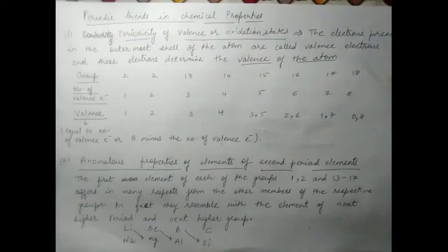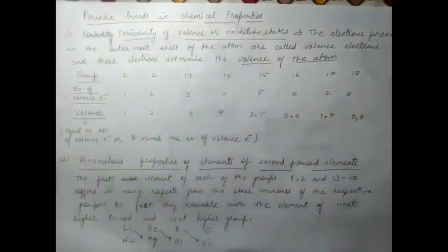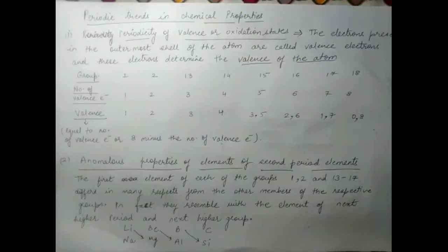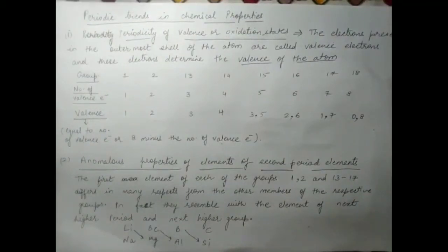Now moving on to the last topic of this chapter: periodic trends in chemical properties. We have already learned the variation of periodic properties in periods and groups. The first topic here is periodicity of valence or oxidation state. The electrons present in the outermost shell are called valence electrons, and they determine the valence — that is, the combining capacity — or how many bonds an element can form.